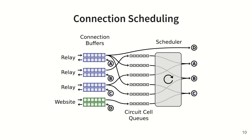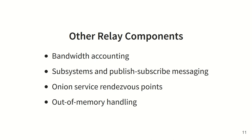Not shown in the previous diagram is Tor's connection scheduler, which runs periodically and chooses the highest priority connections and circuits to send data from. This scheduler has global knowledge about every connection and circuit in the relay, and is important for fairly distributing the relay's bandwidth capacity among circuits. There are many other relay components that we're not going to discuss today, but are important to the design of the relay, and we discuss these a bit more in our paper.